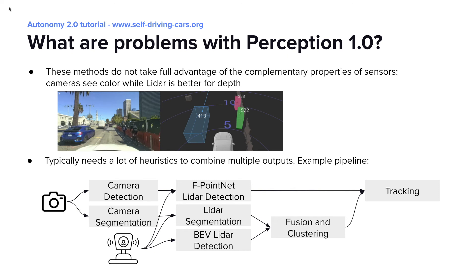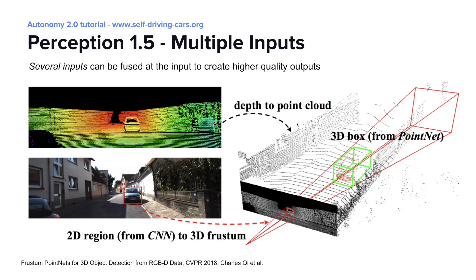What are the problems with Perception 1.0? One issue is that models based on single modalities don't take full advantage of the complementary properties of sensors. For example, LiDAR has excellent depth information but can't see color, while cameras are the opposite. In a scene with a pedestrian and cyclist near traffic and walls, it's very difficult in LiDAR space to separate points belonging to humans versus walls, while from the camera view it should be easy. Fusing these signals early on should produce much better results. Another challenge is that combining many models requires significant glue code and heuristics such as threshold tuning, making scaling and optimizing the stack very challenging.